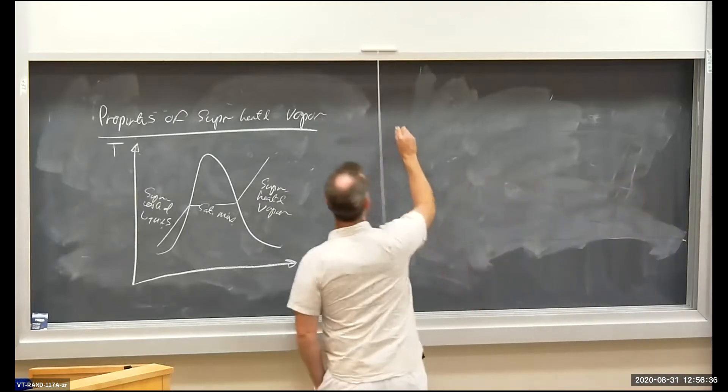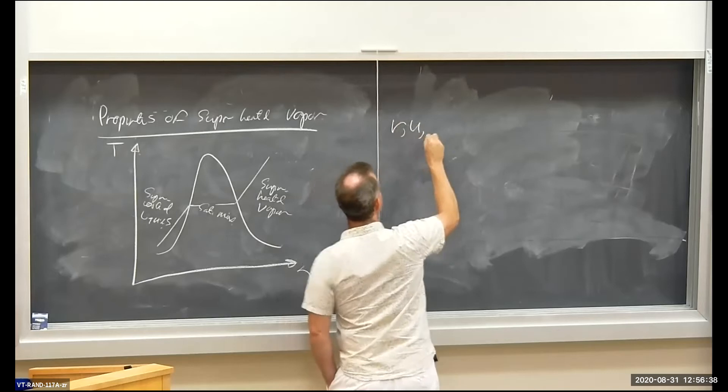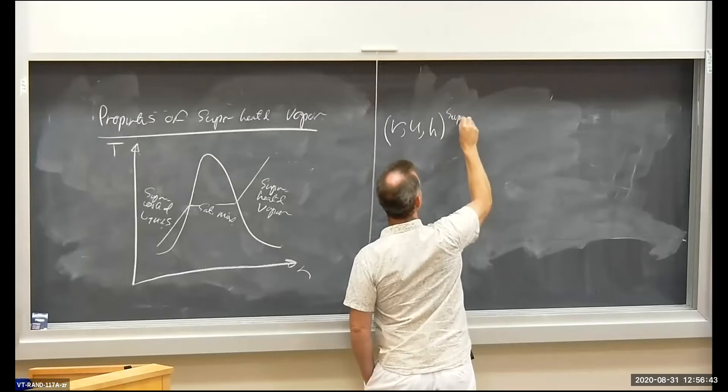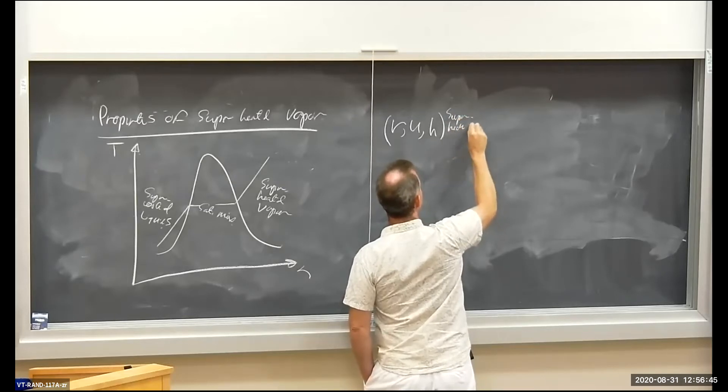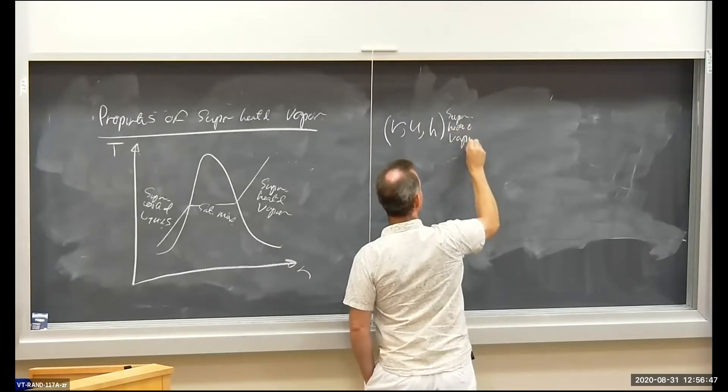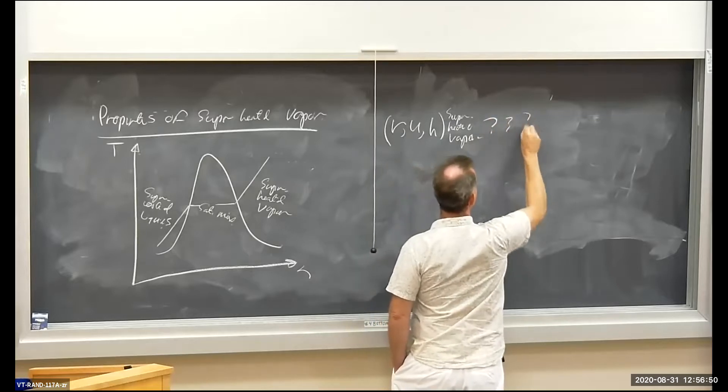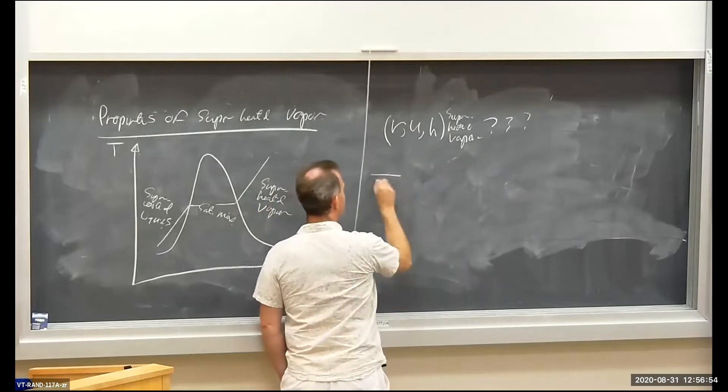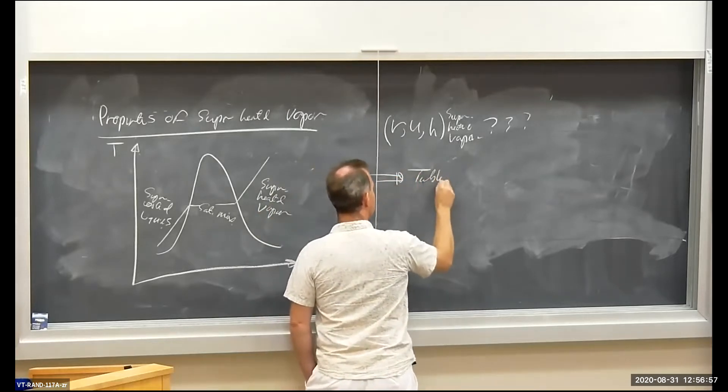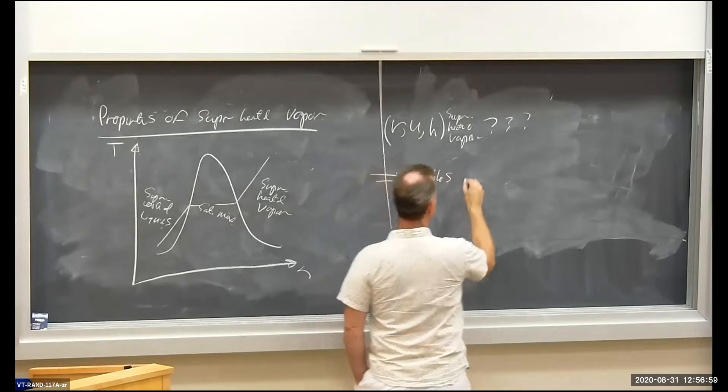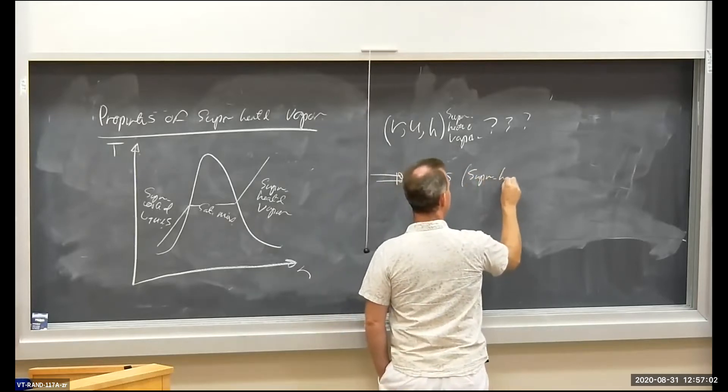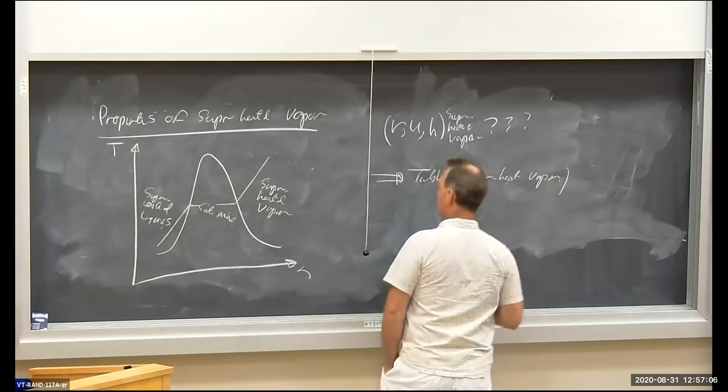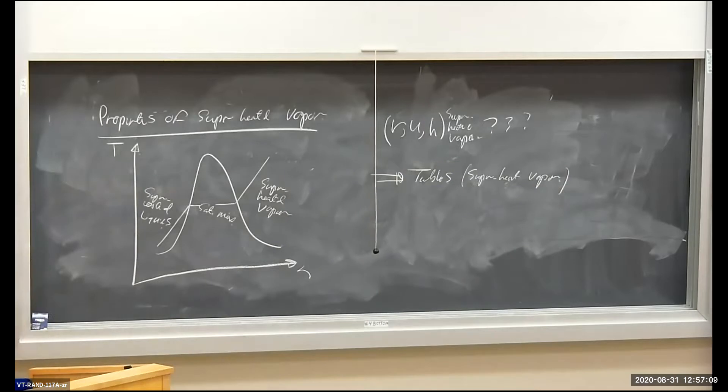So how do we get specific volume, internal energy, and enthalpy for superheated vapor? How do we do it? Well, we have to use a bunch of tables. What kind of tables? Superheated vapor tables.